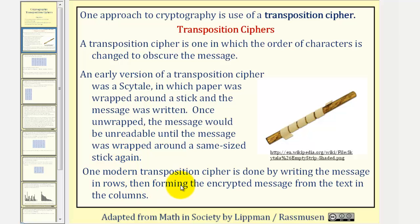One modern transposition cipher is done by writing the message in rows, then forming the encrypted message from the text in columns.